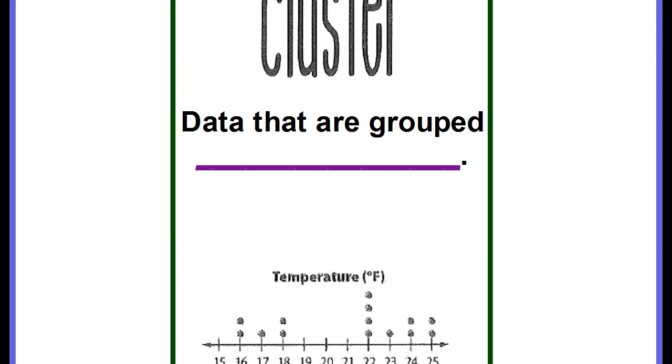The first is to talk about the clusters. Clusters are data that are grouped closely together. If you look down here at our dot plot of temperatures, you can see where each dot represents a piece of data, that the data is clustered between 16 and 18, and there's also a cluster between 22 and 25 degrees. These are data that are close together. They're called clusters.